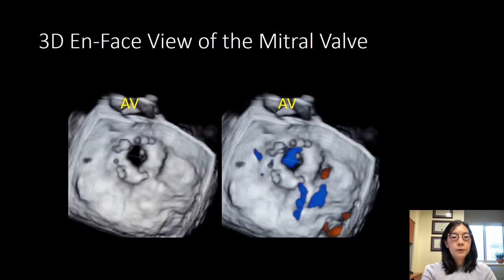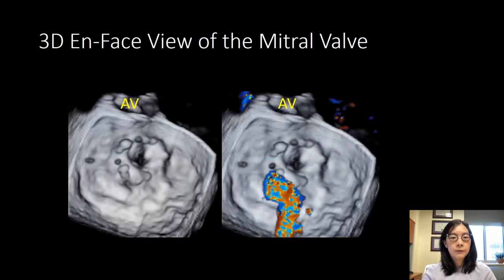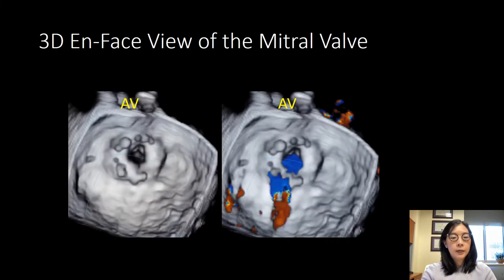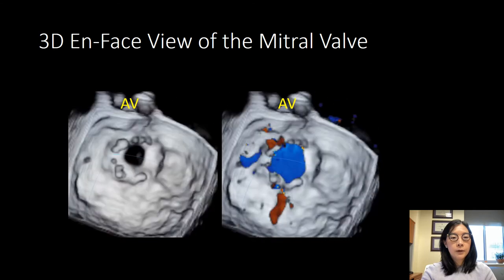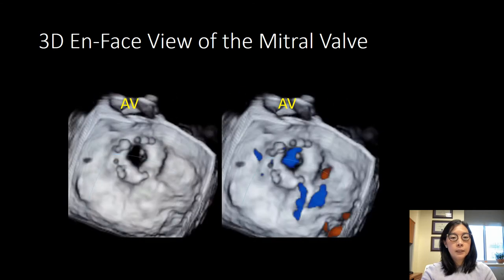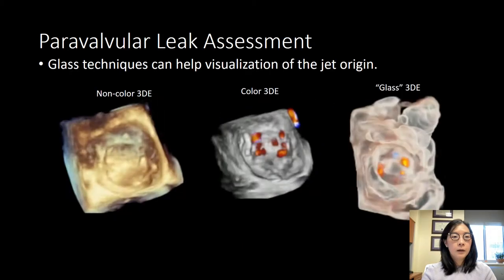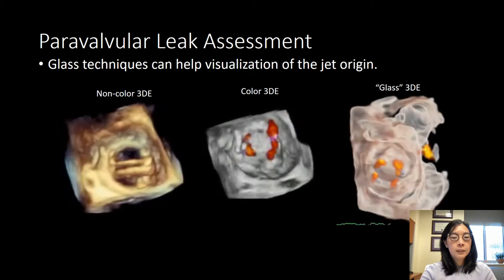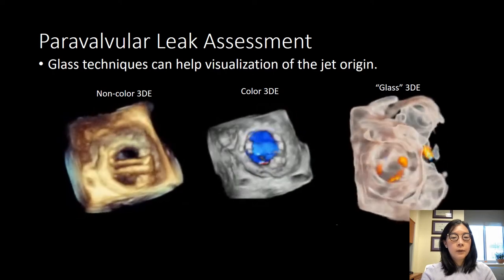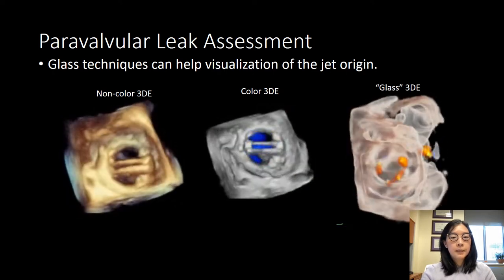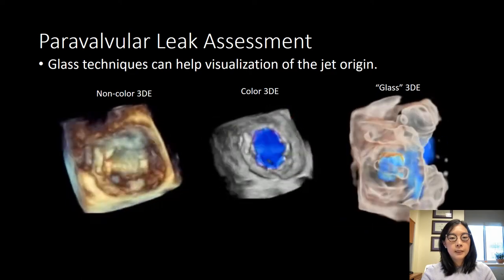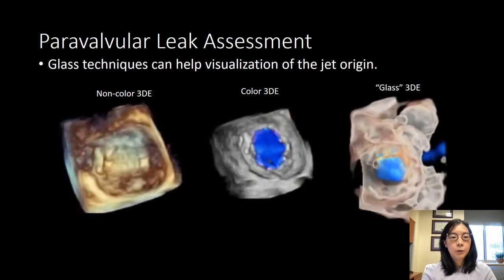For the mitral valve, 3D echocardiography has been particularly useful for identifying jets. Here we can see a color and non-color 3D en face view of a bioprosthetic mitral valve, and you can see the location of a large jet. There are some newer techniques that are being shown to be very helpful for assessing paravalvular leaks, especially with the mitral valve. There is the development of this glass technique where the tissues are made more transparent, allowing you to find the origin of the jets and see if it is valvular or paravalvular.